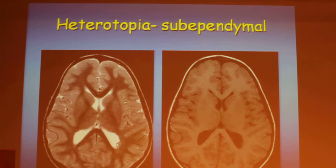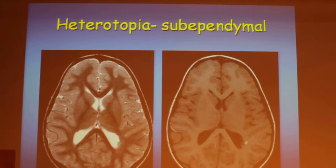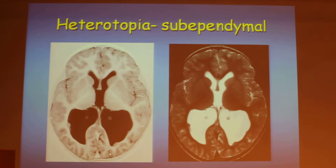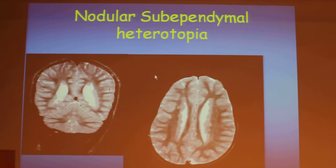What we have to check is if this nodule has an appearance of gray matter in all sequences, just to prove to ourselves that it is a heterotopia and not another abnormal sub-ependymal nodule. It can be one or can be multiple, as in this case.